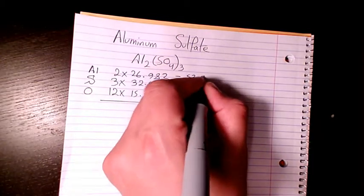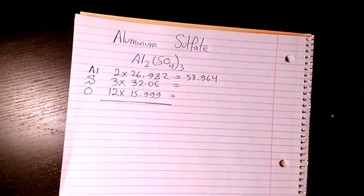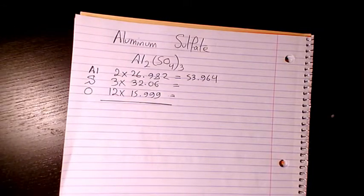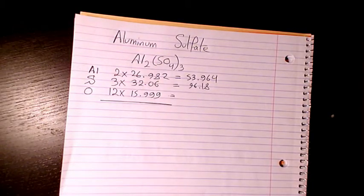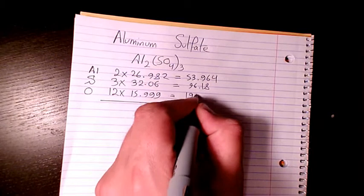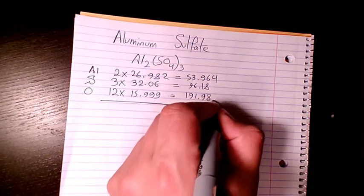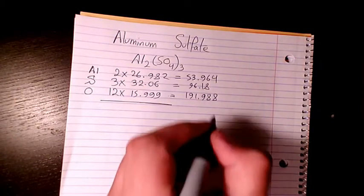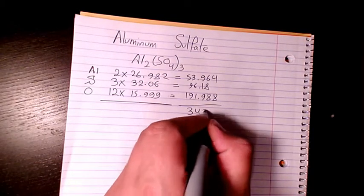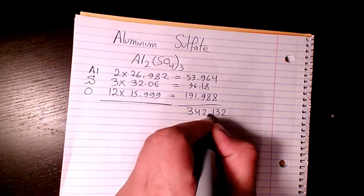3 times 32.06, which is 96.18. 12 times 15.999, it's gonna be 191.988. You add it with 53.964, 96.18, it's gonna be 342.132 grams per mole.